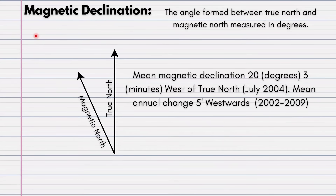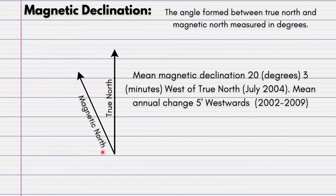Magnetic declination is definitely the hardest calculation you will experience in GIS questions. It is the angle formed between true north and magnetic north, measured in degrees. True north is one line, and magnetic north is a second line pointing towards the left — meaning west. This diagram with the two lines and a short paragraph is found at the bottom of your map, and it contains a lot of important information you will need for your calculations.